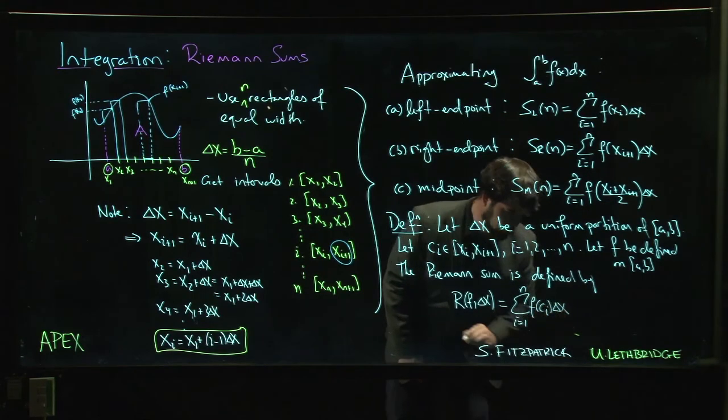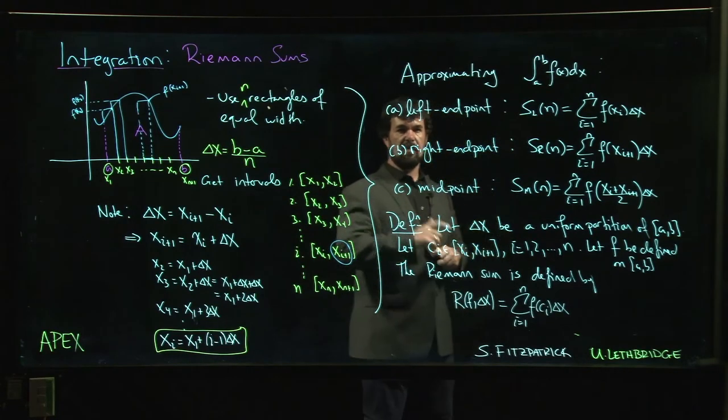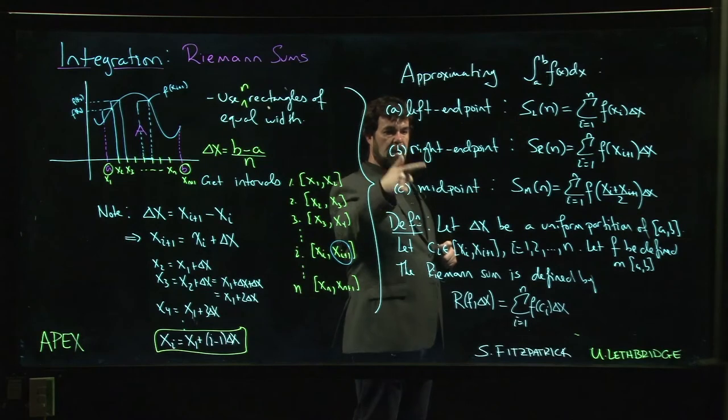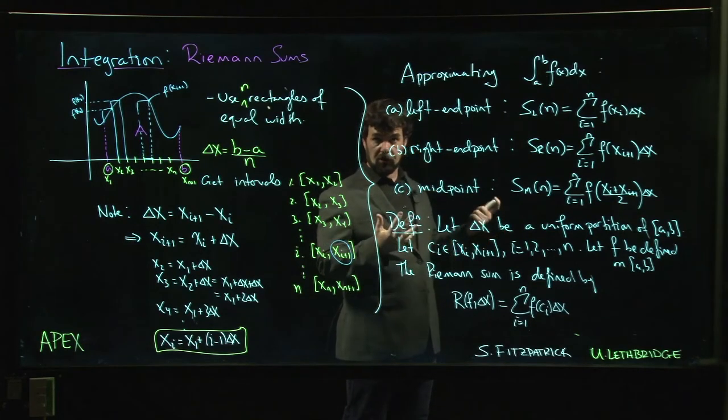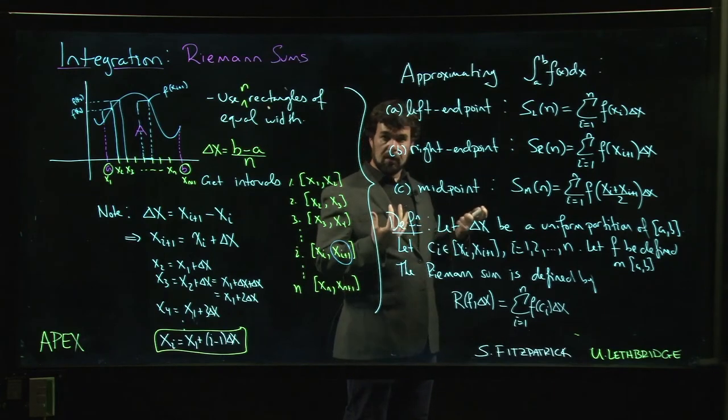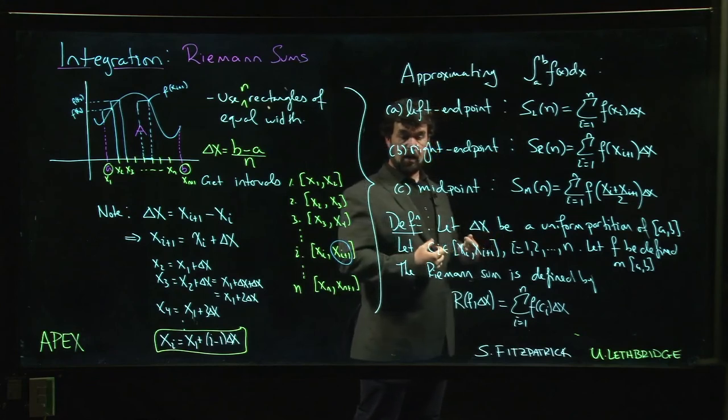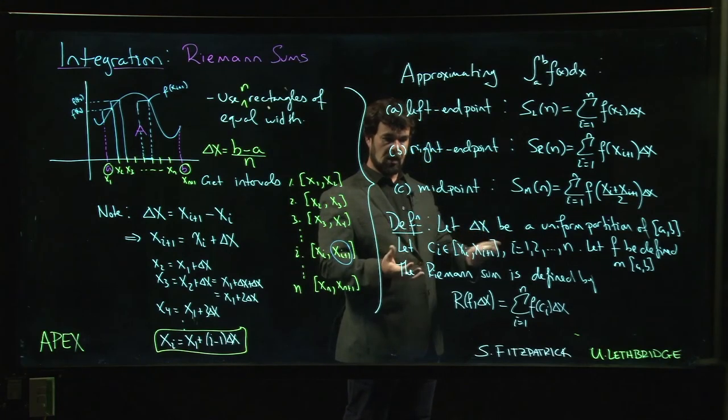So in particular, these left endpoint, right endpoint, and midpoint sums are all special cases of Riemann sums. These are Riemann sums, but we allow Riemann sums to be a little bit more general. We allow some freedom in how we choose the points in each interval. Yeah, that's a Riemann sum.